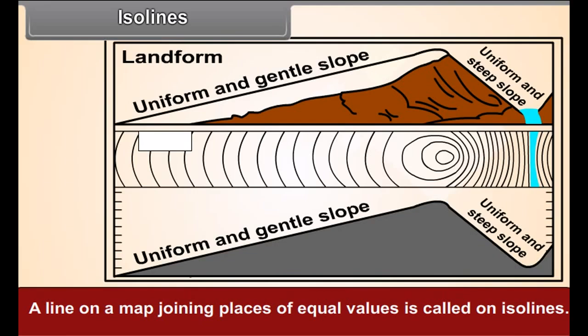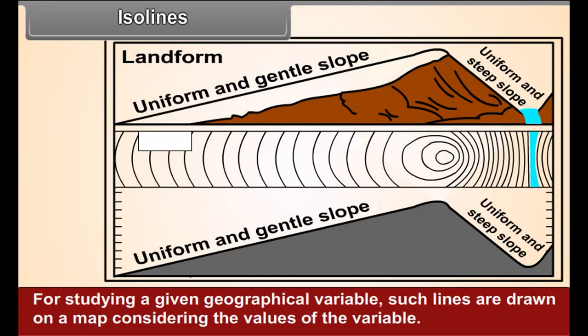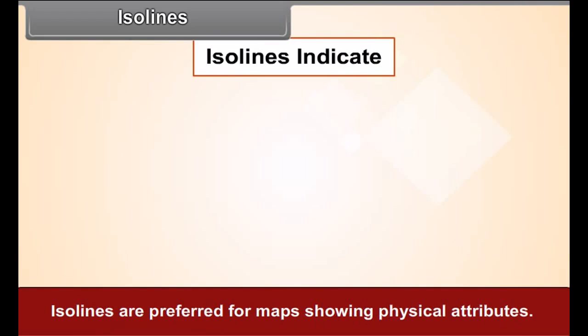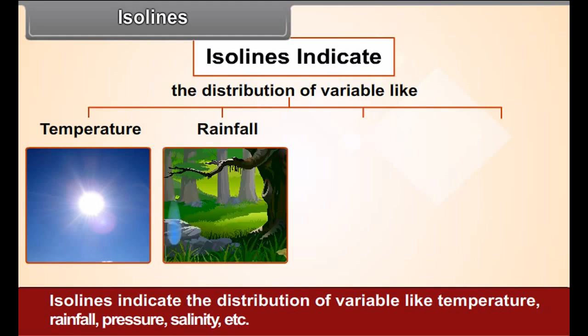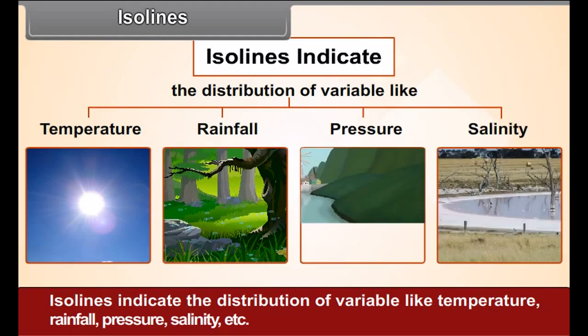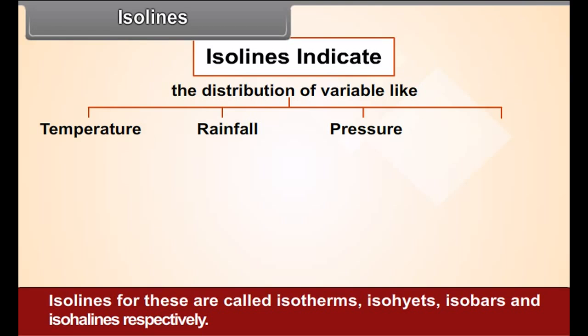Isolines. A line on a map joining places of equal values is called an isoline. For studying a given geographical variable, such lines are drawn on a map considering the values of the variable. Isolines are preferred for maps showing physical attributes. Isolines indicate the distribution of variables like temperature, rainfall, pressure, salinity, etc. Isolines for these are called isotherms, isohyets, isobars,